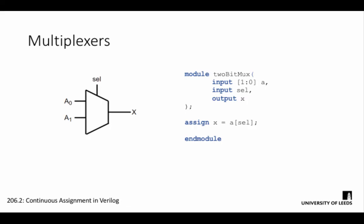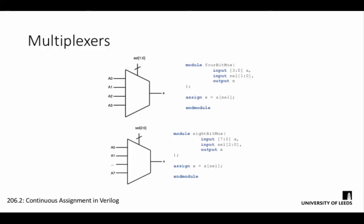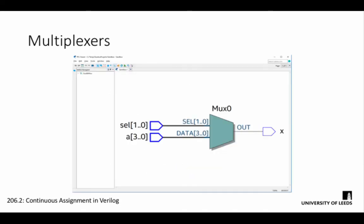As we know from earlier lab sessions, we address an entire bus just by referring to its name, so we can easily scale this module up to a 4- or 8-bit multiplexer just by changing the number of inputs. The assignment line itself doesn't change.